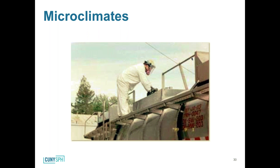Microclimates are important considerations when IHs assess health risk. Movement of air over the skin maximizes heat removal by evaporation and convection, but protective clothing can compound thermal problems because it retains heat and prevents sweat evaporation. Waterproof clothing in particular is especially problematic in hot environments, as it totally retains moisture within the protective garment.